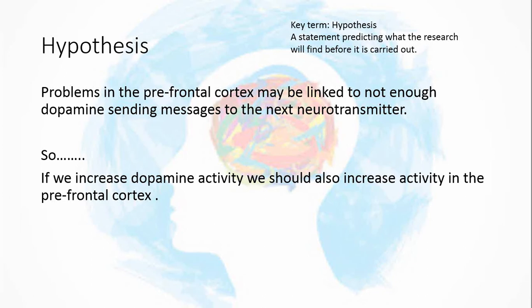The hypothesis for Weinberger and co's study is that if there isn't enough dopamine sending messages around the prefrontal cortex, that might be having an impact on schizophrenic symptoms. So if we increase that activity and put more dopamine in the prefrontal cortex, we should, by process of elimination, see more activity in the prefrontal cortex - one should lead to the other.